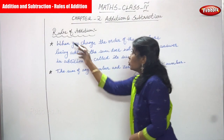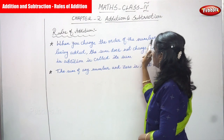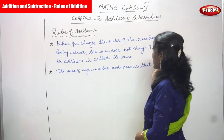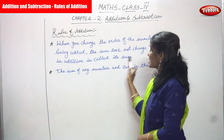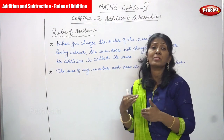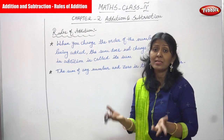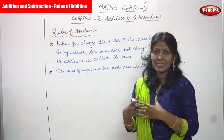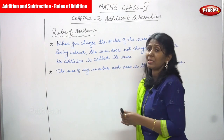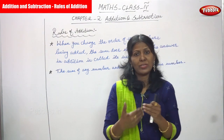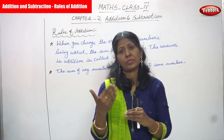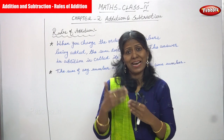Rules of addition: when you change the order of the numbers being added, the sum does not change. The answer in addition is called the sum. Addition means you add two numbers, three numbers, or more than three numbers — you just join them together. When you add two numbers, even if you add the first number to the second or the second to the first, the numbers being added are called addends.